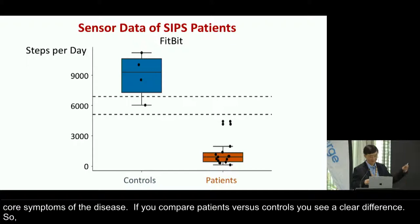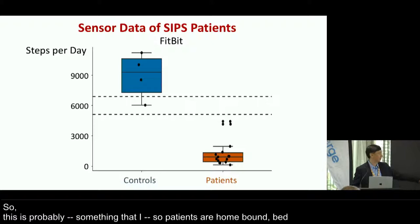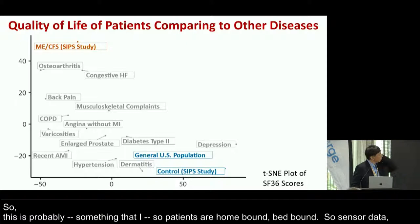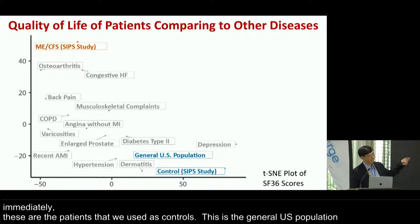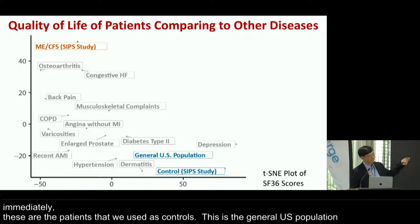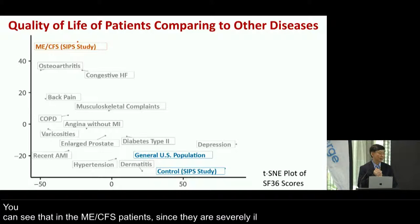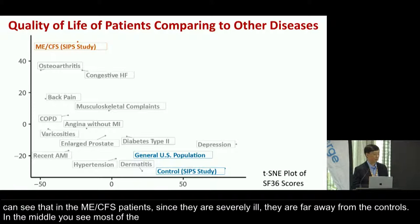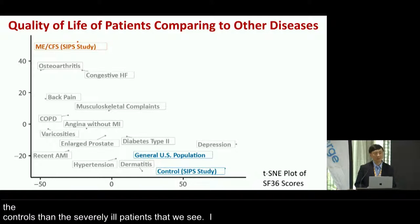The patients are homebound and bedbound, so in terms of number of steps taken based on sensor data it is very low in most patients. From the SF36 quality of life measurements, you can immediately see that the ME-CFS patients we studied — since they're severely ill — are far away from the controls and from the general US population. Most well-known significant human diseases are actually closer to controls than the severely ill ME-CFS patients we see.